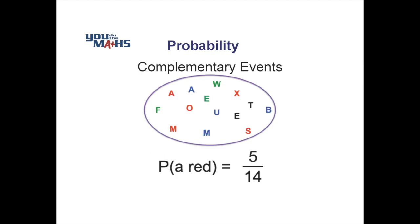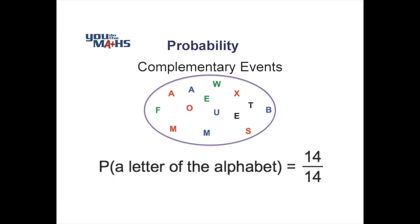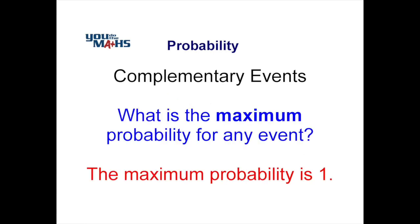Now let's consider another case — the probability of a letter of the alphabet being selected. Looking at our diagram, there are 14 possible letters and every single one of those is a letter of the alphabet. So the probability of selecting a letter from the alphabet is 14 out of 14, in other words 1. That's the maximum possible probability, because the number of favorable outcomes will never exceed the total number of outcomes. So the maximum probability for any event is 1.